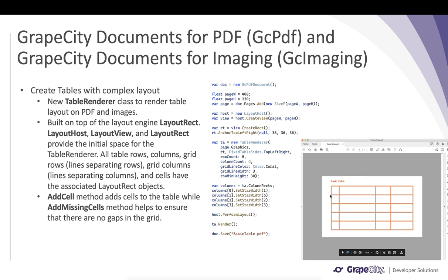This is the code that helps you do this. You define a PDF document and define the dimensions of the PDF page, then you call the LayoutHost object which will help you define the initial view. You create a view with the same dimensions as the PDF page.